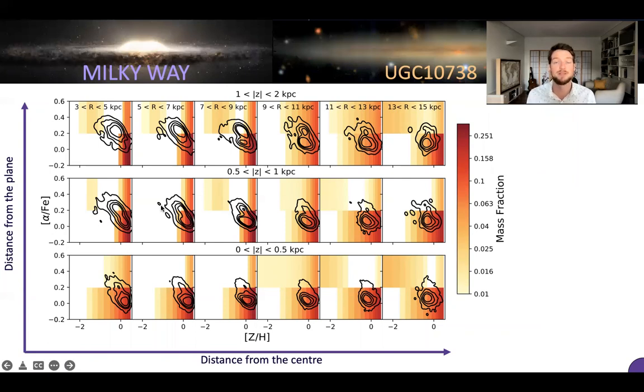This is a similar figure to Hayden et al., using the same data from APOGEE, where we're showing the distance from the center for every panel versus the distance off the plane. Each panel shows the alpha to iron versus metallicity. And whilst this can only give you a qualitative comparison, because for UGC 10738 we only have two alpha components that we can measure, if you look, for example, at the region around the solar radius, you're seeing the same type of behavior.